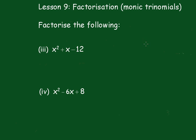Right, now we say what two numbers multiply to give negative 12 and add up to give 1, because that's an understood 1 in front of the x there.